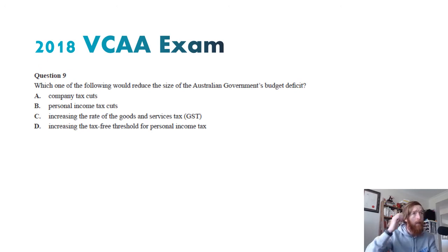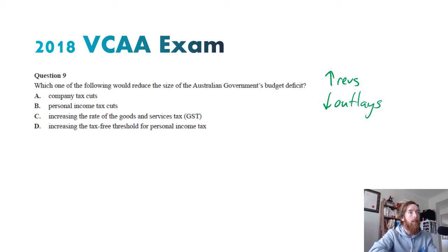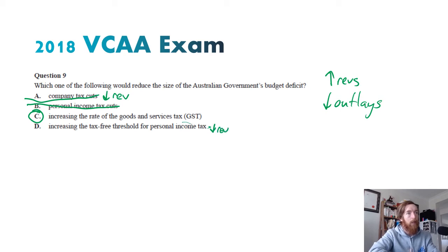Question nine — which of the following would reduce the size of the government's budget deficit? That's asking: what gets more revenues or less outlays? Company tax cuts — less revenues, rule it out. Personal income tax cuts — same, rule it out. Increasing the rate of goods and services tax — that improves revenues, potentially the answer. Increasing the tax-free threshold — less revenues, rule it out. So C — increasing the GST rate — is the only one that gets more tax revenue.